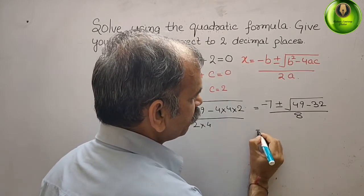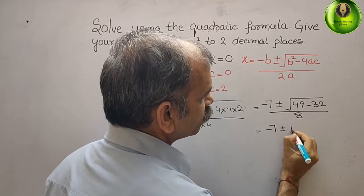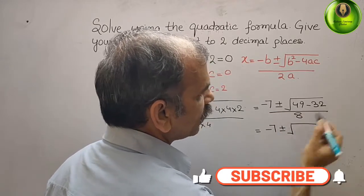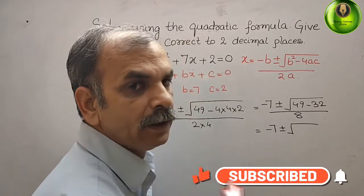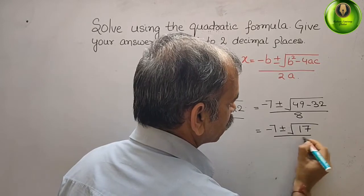That is equal to, we can say it's -7 ± √17 / 8.